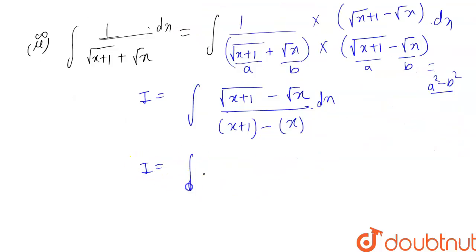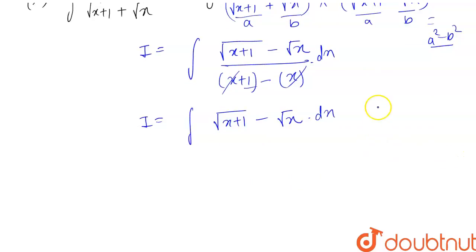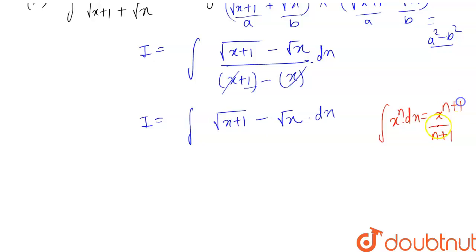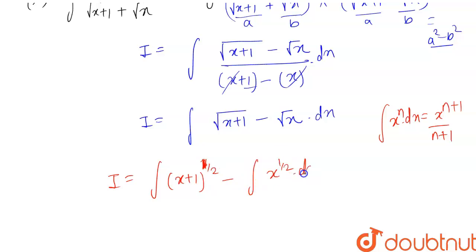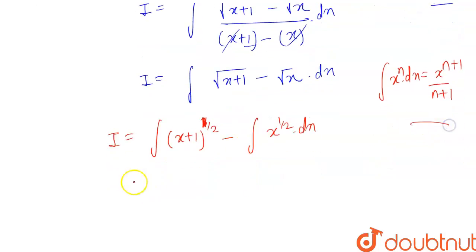So I becomes the integration of (√(x+1) − √x) dx, since the denominator simplifies to 1. Now we use the power rule formula: integration of xⁿ dx = x^(n+1) / (n+1) + c. This gives us the integration of (x+1)^(1/2) minus x^(1/2) dx.